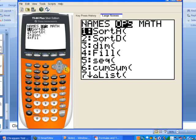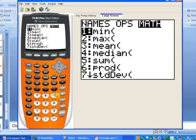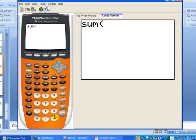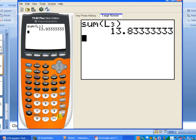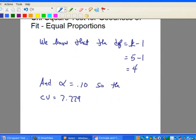Now, we want to take the sum of those values in L3. So to get to the list commands, I'll hit the second key and stat. And then move over to the math menu. And then notice option 5 says sum. So I'll just tap on number option 5. And then we want to sum up the values that are in L3. So I'll hit the second key and then number 3 to get L3. Close the parentheses and hit Enter. So it looks like our chi-square test statistic for this problem is 13.83.